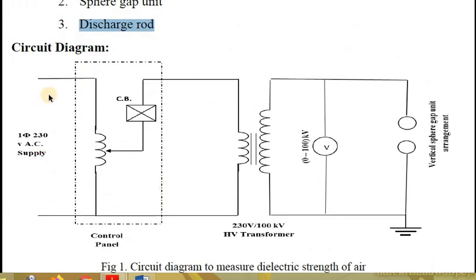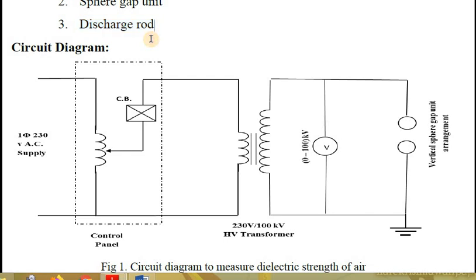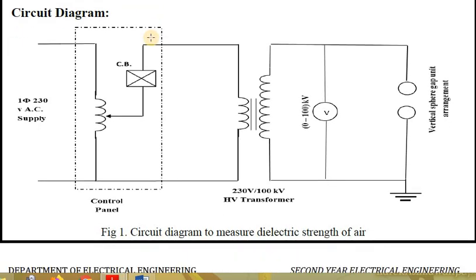Here is the circuit diagram to be followed. We need a single phase AC supply of 230 volt, 50 Hz. This AC supply is connected to a single phase autotransformer, also called a single phase variac. Through this autotransformer, it is connected to a circuit breaker, and from the circuit breaker it is connected to a step-up transformer rated 230 volt to 100 kilovolt. At the secondary side, we place the sphere gap unit, with one terminal earthed. The breakdown voltage is measured across the voltmeter, which has a range of 0 to 100 kilovolt.